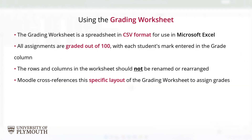The grading worksheet, which accompanies the submissions folder, is a spreadsheet in .csv format and should be opened in Microsoft Excel. Grades out of 100 are added for each student in the grade column. Columns should not be renamed or rearranged, as Moodle links grades to submissions by cross-referencing this specific file format and layout.